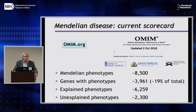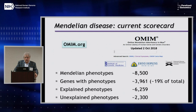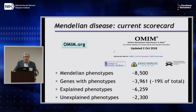We tend to keep score using OMIM. As of early this morning, OMIM lists about 8,500 Mendelian phenotypes. There are 3,961 genes which can cause a Mendelian phenotype, and those 3,961 genes explain 6,259 phenotypes. As Chris mentioned, there are some genes with variants that cause two or more very discrete phenotypes — a clinical geneticist would never have guessed they're due to mutations in the same gene. Lamin A, by my count, has somewhere between 13 and 15 discrete phenotypes — some genes are quite good at causing many different phenotypes.